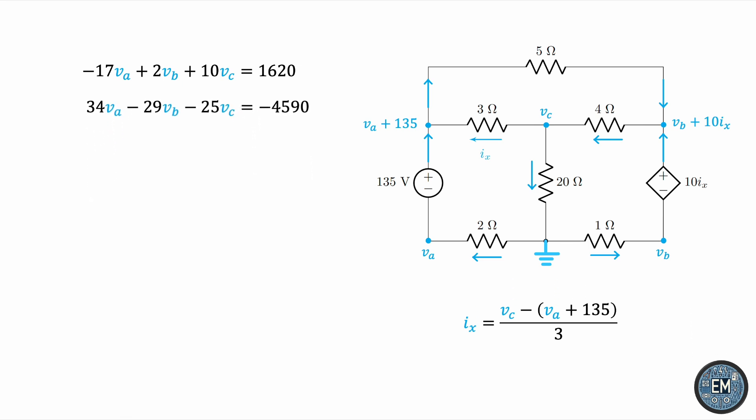Finally, we repeat the process for this node, node C. We have this current entering the node. Again, the current leaving node B, which was VB plus 10IX minus VC over 4. IX is clearly leaving node C. But the other current leaving node C is this current going down through the 20-ohm resistor. VC minus 0, ground, all over 20.